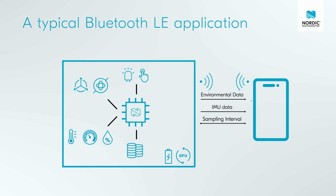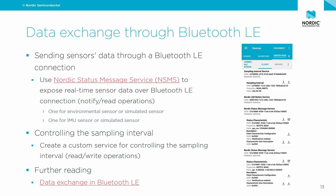We have already collected the sensor readings locally and printed them on the serial terminal. In this video we will learn how to wirelessly transmit this data via Bluetooth Low Energy so that we can access it on our mobile phone using the nRF Connect for Mobile app. We will also add a mechanism to control the sampling interval of the sensors, accessible from the mobile app.